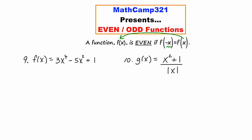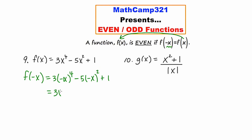So I'm going to start by evaluating f of negative x. Wherever I see an x, I'm going to substitute in its place negative x. Now, negative x to the fourth is like negative x times negative x times negative x times negative x. The negative one in front — negative one to the fourth power is just positive one. And then x raised to the fourth is x to the fourth, so this turns into 3x to the fourth.